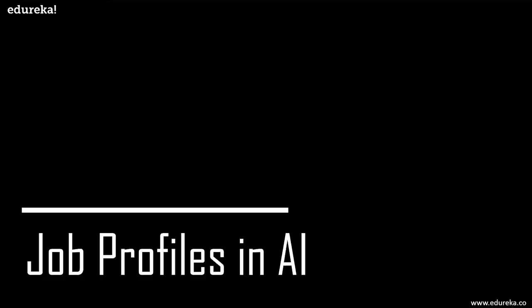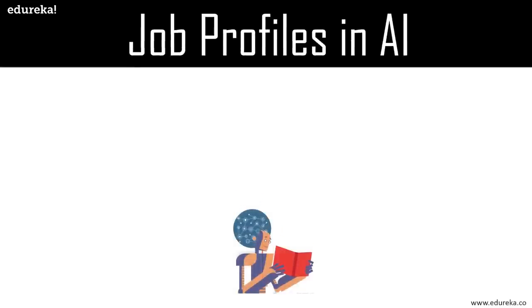Machine learning engineers are sophisticated programmers who develop machines and systems that can learn and apply knowledge without specific direction. Artificial intelligence is the goal of a machine learning engineer. They are computer programmers, but their focus goes beyond specifically programming machines to perform specific tasks — they create programs that enable machines to take actions without being specifically directed to perform those tasks. They can earn a salary of around $110,000 per annum.